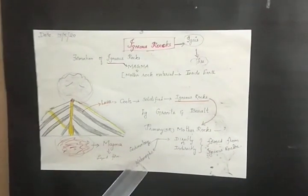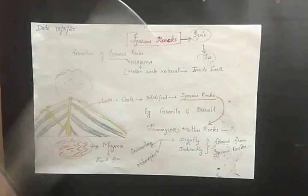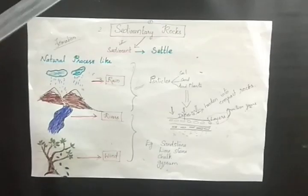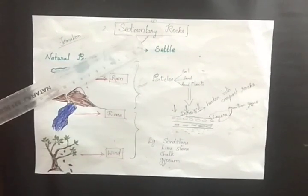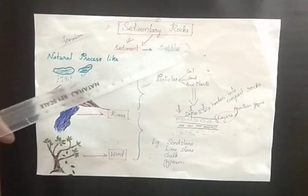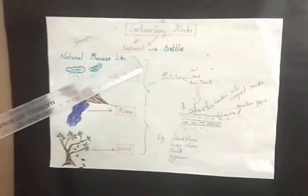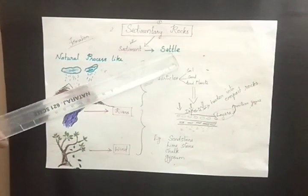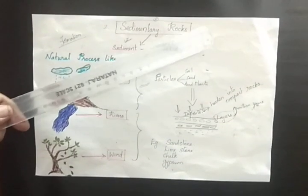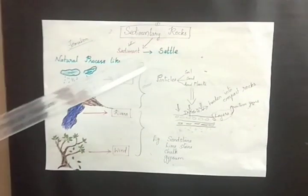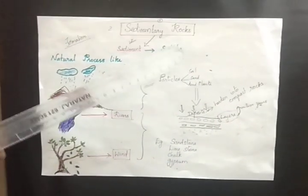Now we are going to see about sedimentary rocks, which is the second type of rock. The word 'sedimentary' is derived from the Latin word 'sediment' which means settled.